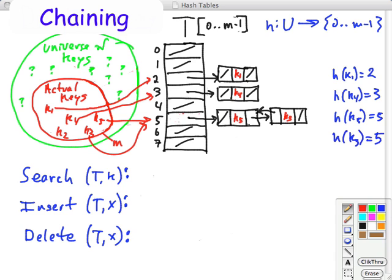So let's take a look at what the procedures look like, the search, insert, and delete. Let's start with insertion. To insert, you simply hash the key to get the position in the table. That will find the list that you want to insert in, and then insert at the head of that list using the standard linked list procedures.